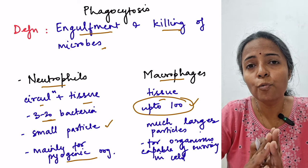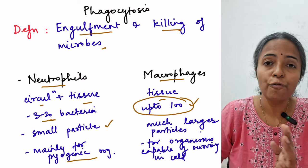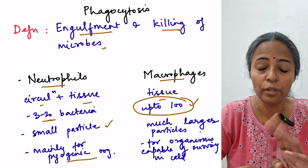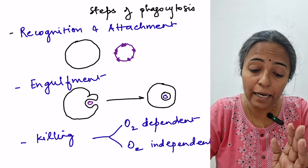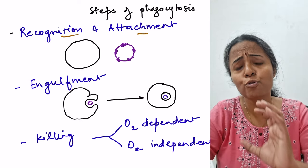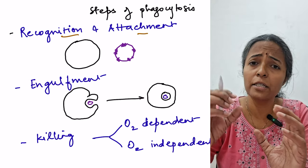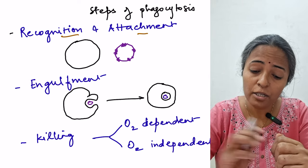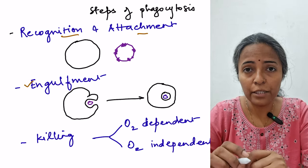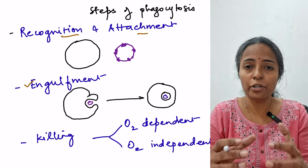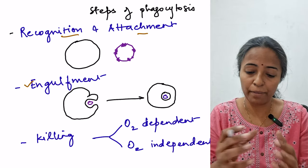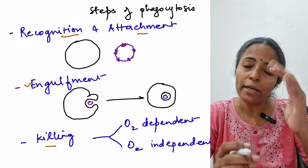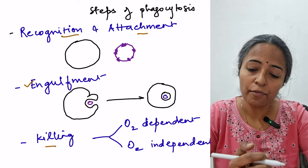Moving on to the steps of phagocytosis — phagocytosis consists of three steps: recognition and attachment, engulfment (literally eating up the particle), and killing of the particle. We will discuss what happens in each of these steps.